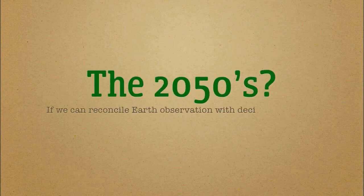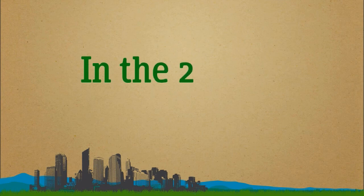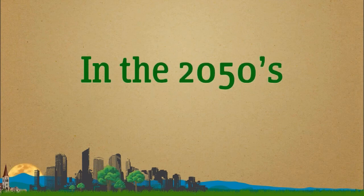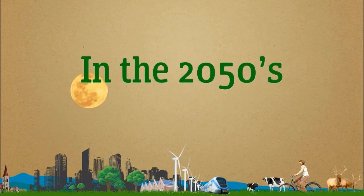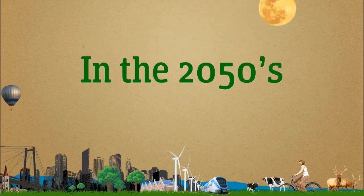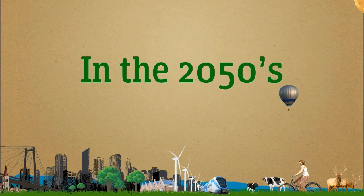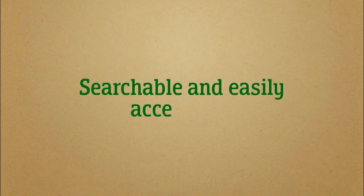What's going to happen in the near future? We believe that mankind needs to reconcile Earth observation with its activities and therefore with its decision-making processes. For a more sustainable future, we need to make better use of our knowledge. We need searchable and easily accessible data on our environment to favour a more democratic understanding of complex environmental and societal issues.